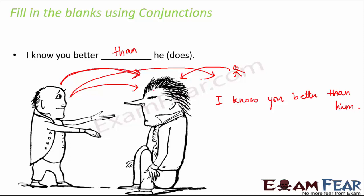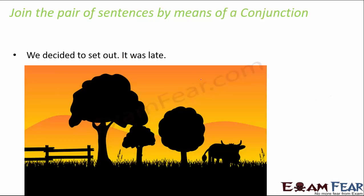Now let's do the next exercise — join the sentences by means of a conjunction. You are given two sentences and must join them into one. 'We decided to set out. It was late.' You can say 'We decided to set out though it was late,' or 'We decided to set out but it was late.' Both are correct but have different meanings. 'But it was late' implies we did not go out, whereas 'though it was late' means even though it was late, we still decided to go.